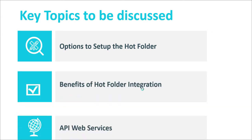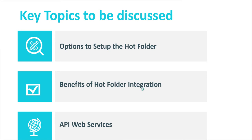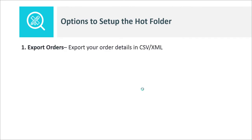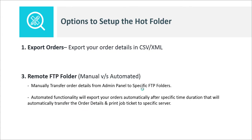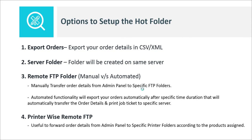Let's move to hot folder settings — how we can set them up and what different options are available. The first one is export orders: you can export your orders into CSV or XML format. The second one is server folder, where a folder is created on the same server where your website is hosted. This is very useful for license customers, but for SaaS customers it's not as important since your website is hosted on our server.